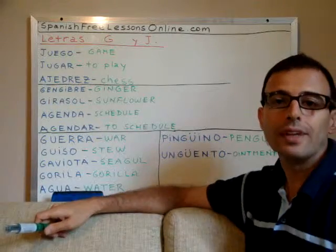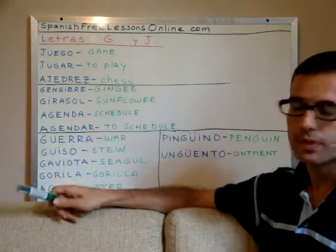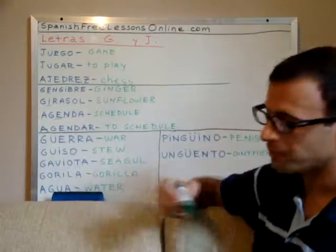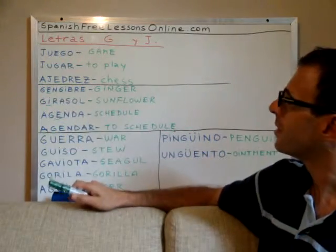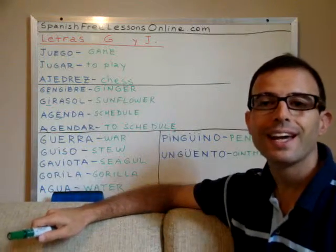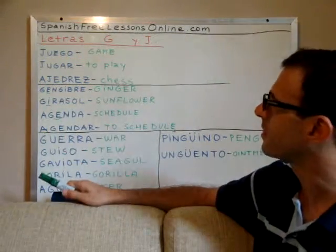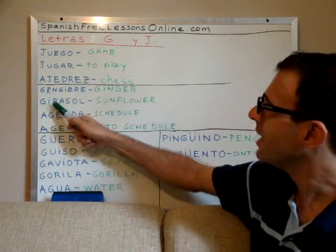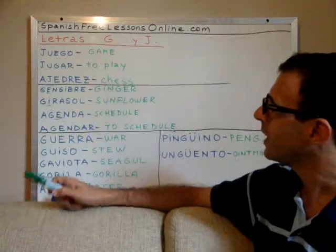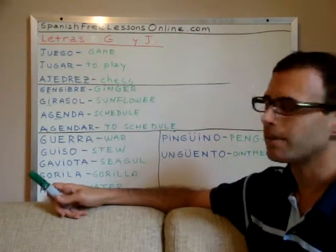Here we have some examples with the letter G sounding the same as J — when it is followed by letter E or by letter I. 'Jengibre' — that's ginger. Here we have the same sound twice with the letter G. 'Girasol' — this is sunflower. 'Schedule' is 'agenda,' and to schedule, the verb is 'agendar.'